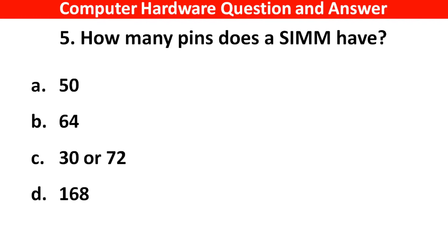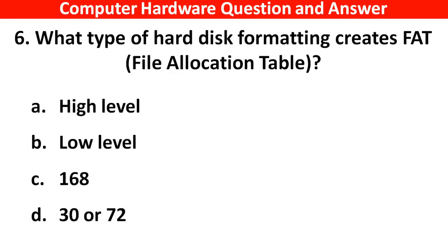How many pins does a SIMM have? The right answer is Option C: 30 or 72.